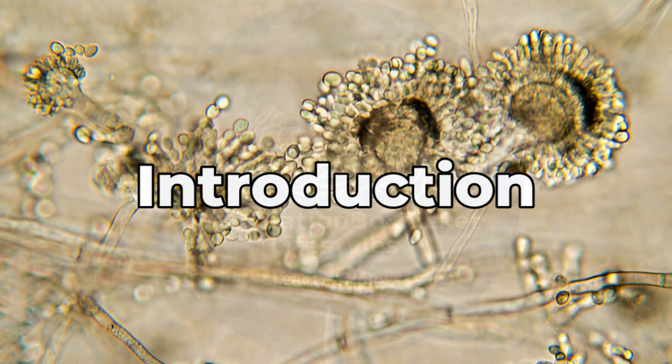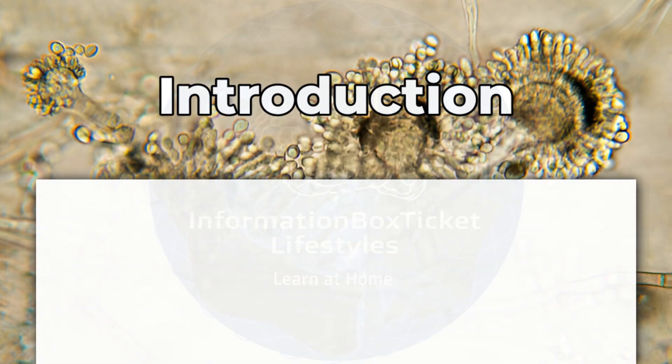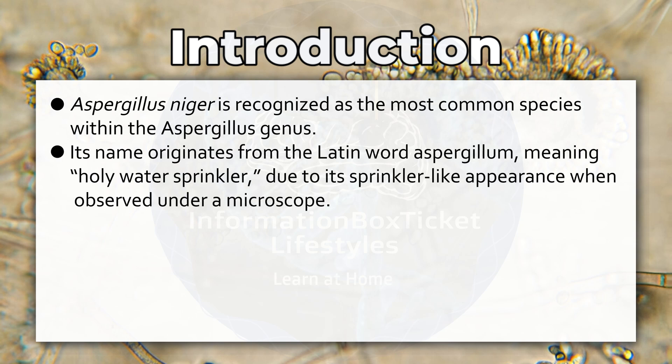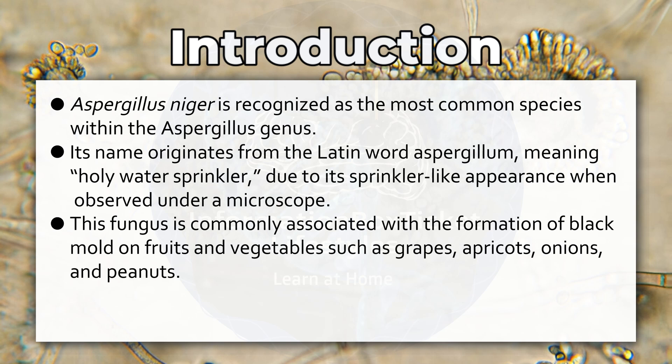Introduction to Aspergillus niger. Aspergillus niger is recognized as the most common species within the Aspergillus genus. Its name originates from the Latin word aspergillum, meaning holy water sprinkler, due to its sprinkler-like appearance under a microscope. This fungus is commonly associated with the formation of black mold on fruits and vegetables.